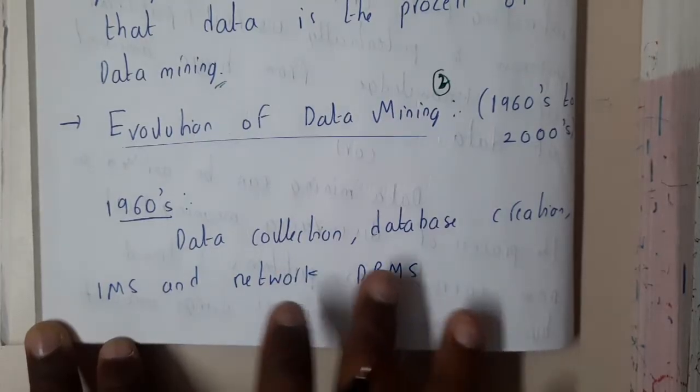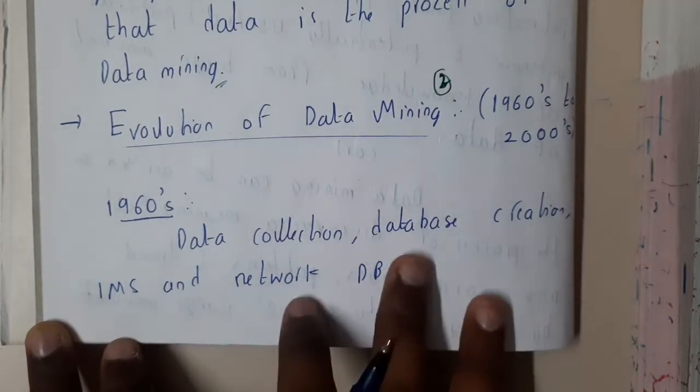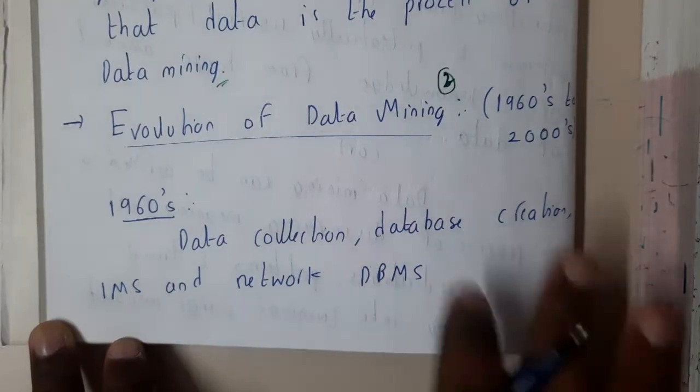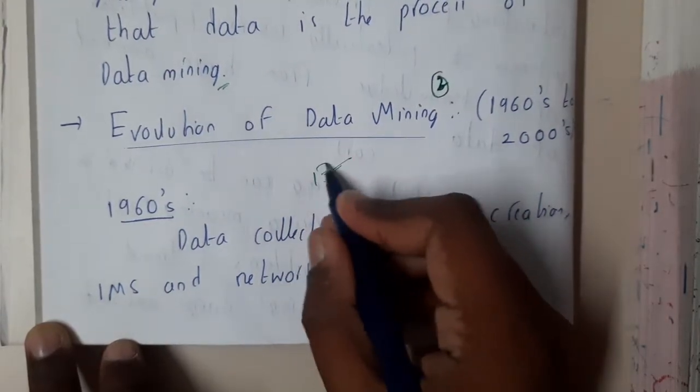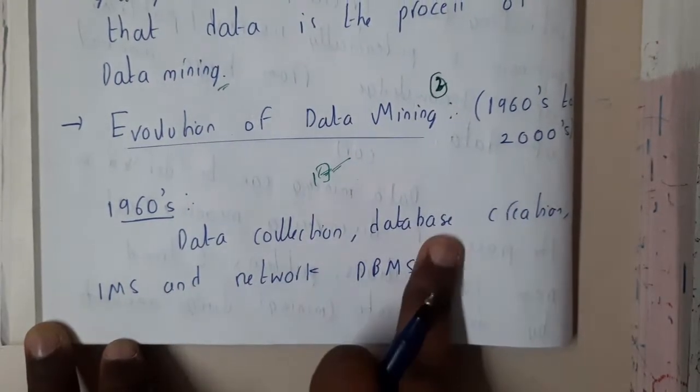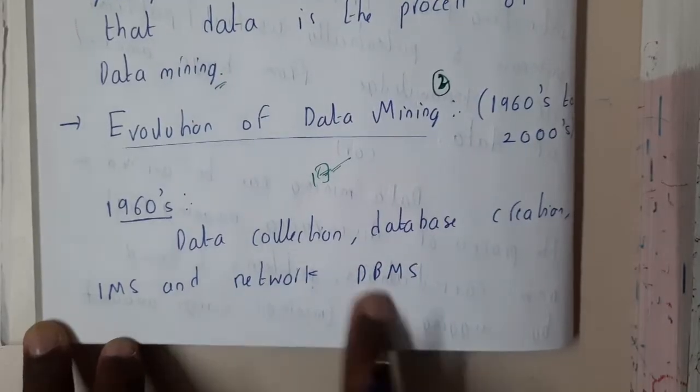But those are relational databases. Initially it was only normal databases - like tables inside tables they used to store the data. So data collection, data creation, IMS and network-based DBMS.